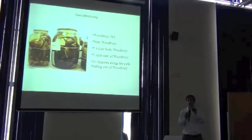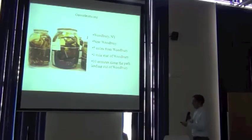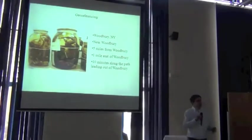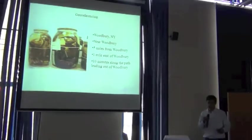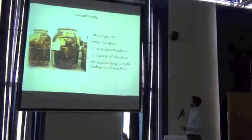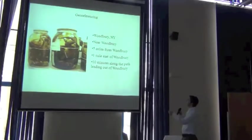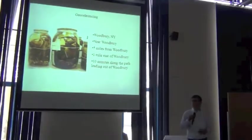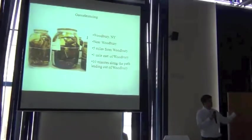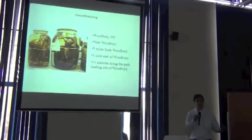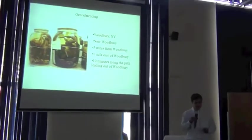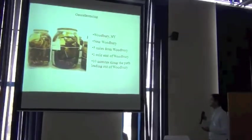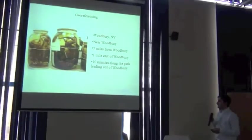Ideally, we have a very fine record of the latitude and longitude of the species. In reality, we might be faced with some of these kinds of records. We might get a label that says it's found in Woodbury in New York, or it might say near Woodbury. It might say five miles or one mile east of Woodbury. It might say ten minutes along the path leading out of Woodbury. These are all the kinds of things, particularly when you go back to older labels, that you will really find on labels in a museum for their own collections. So there's a whole industry, or a whole research agenda.